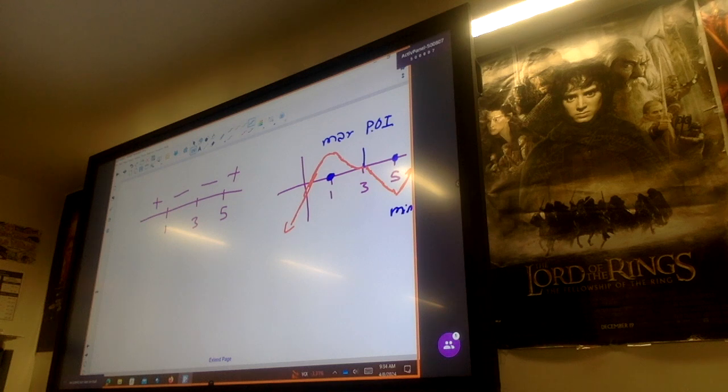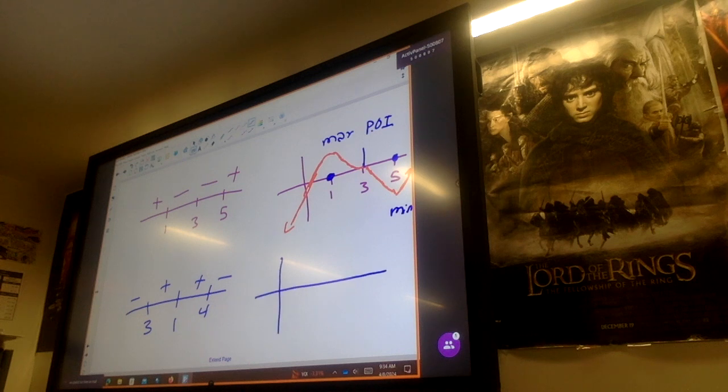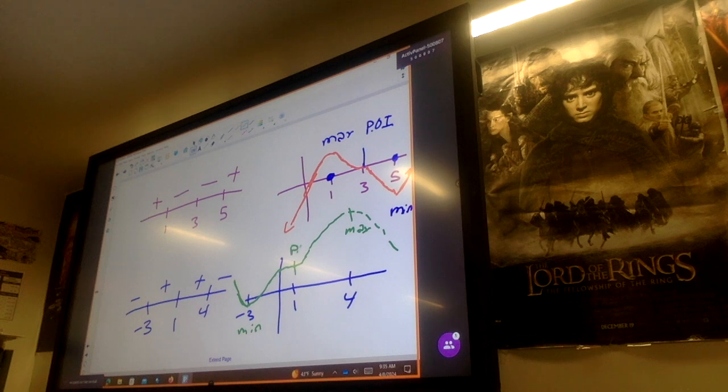All right. So example two. Example two. We have a negative three here. We have a one here. We have a four here. It goes negative, positive, positive, negative. So if we were to try and draw this graph out, that's a negative three. So we have a negative three here, a one here, and a four here. You're just trying to draw the best you can. So I have a negative slope coming in like this, to the three. Then it goes a positive slope. It flattens out. And then it keeps going up. And then it starts going down. So we have a max here, a min here, and right here is a point of inflection. Okay.